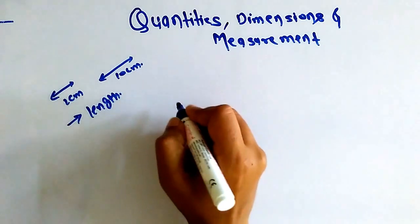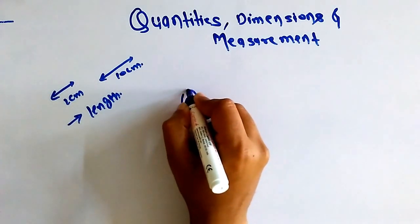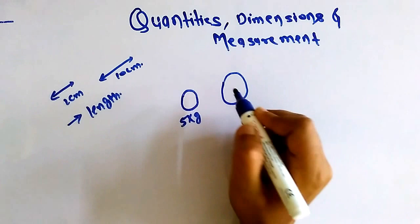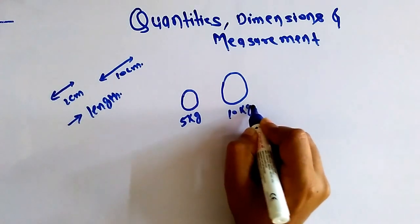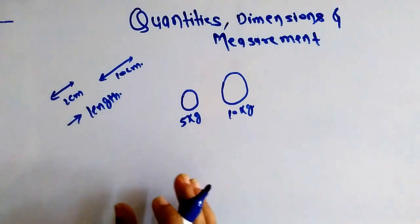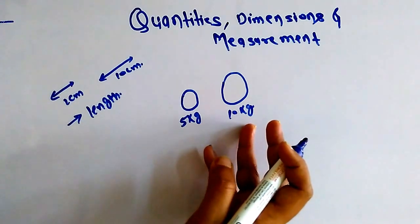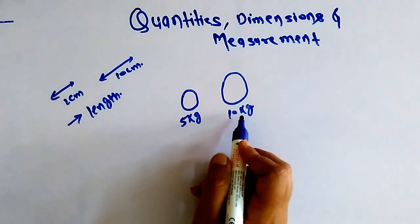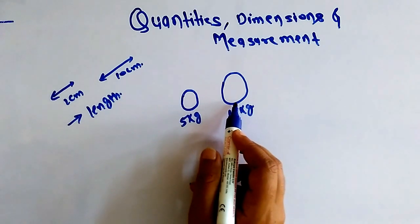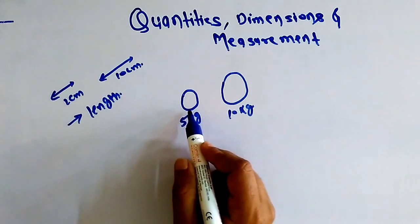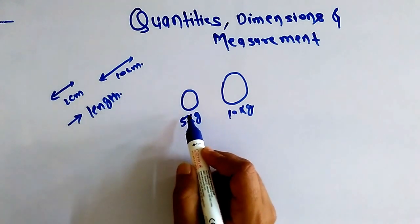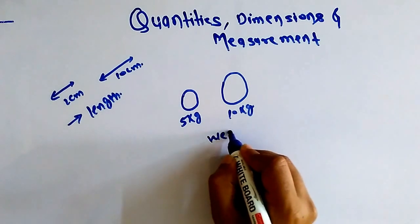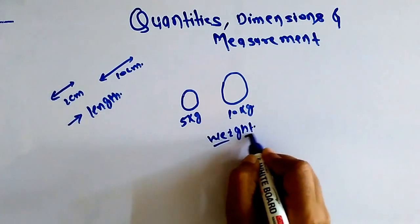Suppose if I am talking about a ball having a weight of 5 kg and another ball having a weight of 10 kg. Both are spherical, but this is the lighter one and this is the heavier one. We say the weight of this ball is 5 kg and the weight of that ball is 10 kg — weight is another characteristic.